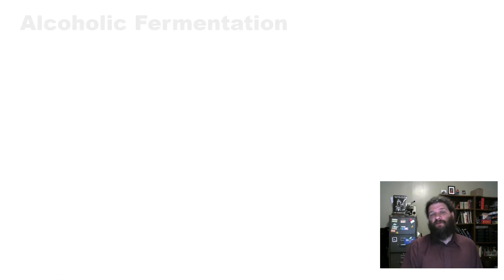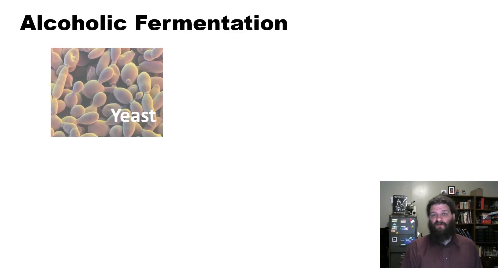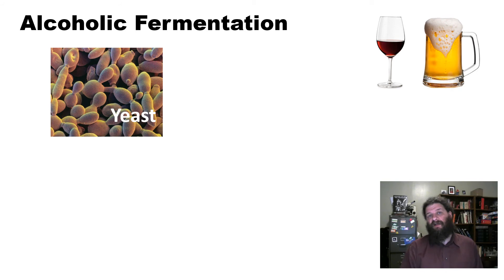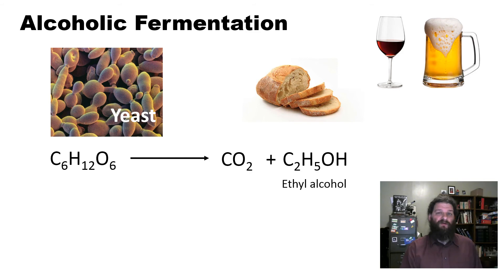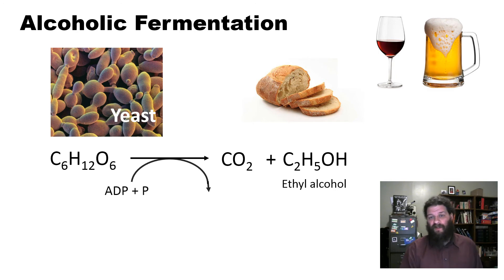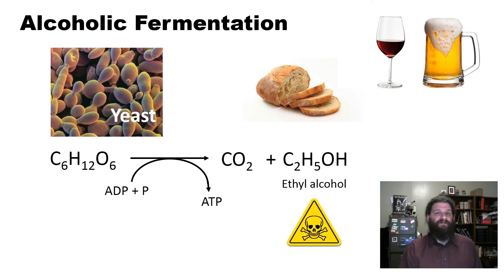There are two fermentation pathways we need to be familiar with. Alcoholic fermentation is one — a pathway carried out by yeast under anaerobic conditions, and it's what we exploit in yeast to make things like beer, wine, and bread. It starts with glycolysis: glucose and no oxygen make carbon dioxide and ethyl alcohol, and it still phosphorylates ADP into ATP. The problem is ethyl alcohol is actually toxic. In an enclosed container, that alcohol builds up to a point where it kills off the yeast, so this is not really sustainable.